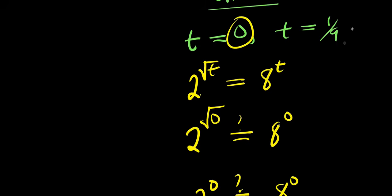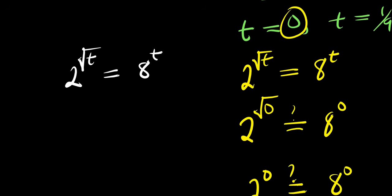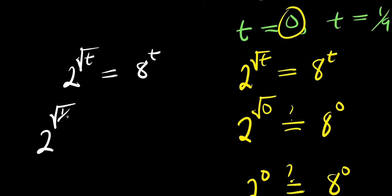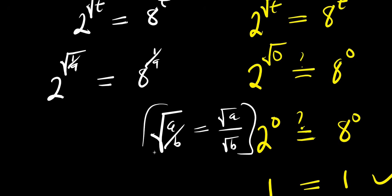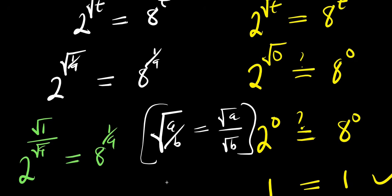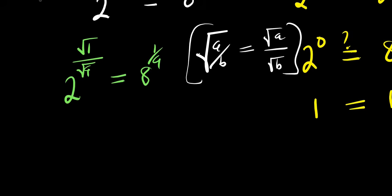Now let's check t equals 1 over 9. Substituting into the equation: 2 to the power of square root of 1 over 9. Using the rule that square root of a over b equals square root of a divided by square root of b, this becomes 2 to the power of 1 divided by square root of 9, which is 2 to the power of 1 over 3. And the right side is 8 to the power of 1 over 9.